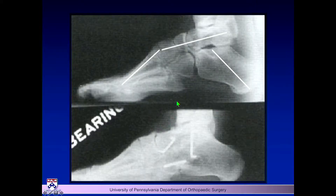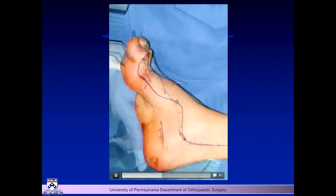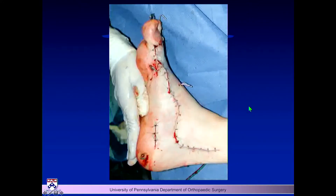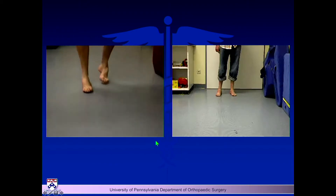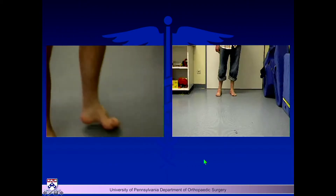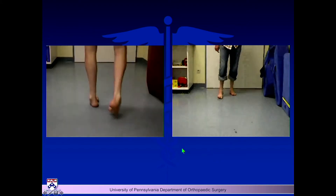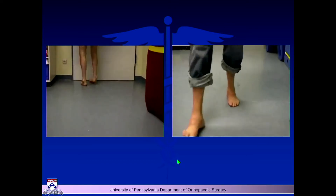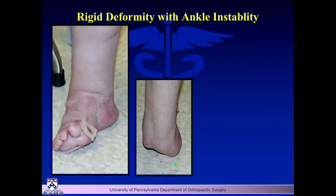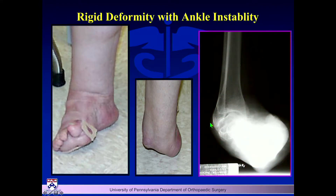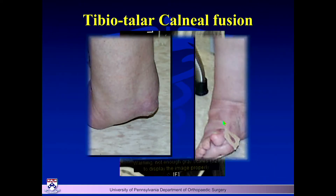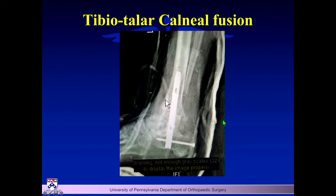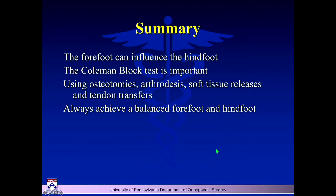If there's severe ankle instability and ankle arthritis, I'll usually move to a tibiotalocalcaneal (TTC) fusion. This is especially applicable to advanced CMT patients who have no peroneal or anterior tibial strength — a TTC fusion actually helps address the whole problem. The goal in all these cases is to take the foot from a varus position to a flat, plantigrade position to preserve the ankle. If you have a rigid deformity with a severely arthritic ankle, you've kind of lost the game, and TTC fusion with a nail is the better option.